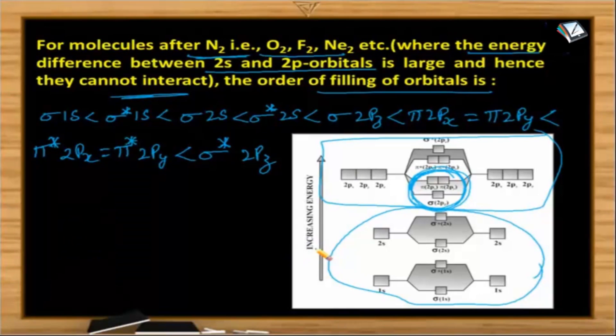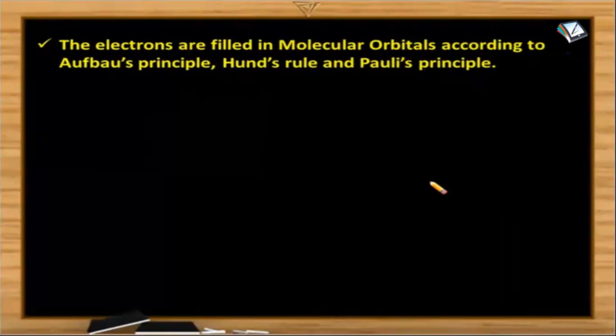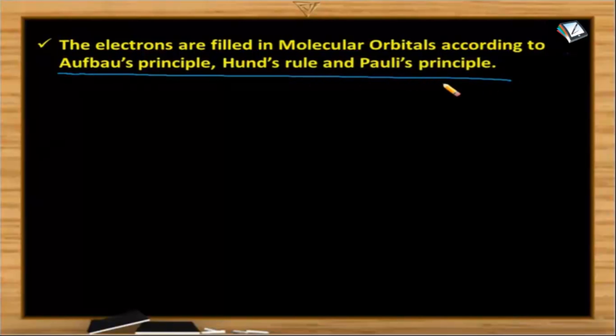As we had learnt the energy of the orbitals based on the Aufbau principle how to fill the electrons in the orbitals, the same pattern in order to fill the electrons into molecular orbitals we need to understand both of them. Up to nitrogen it is in one way and after nitrogen it is in the other way. Now the electrons are filled in these molecular orbitals according to the same principles which we had learnt in atomic structure.